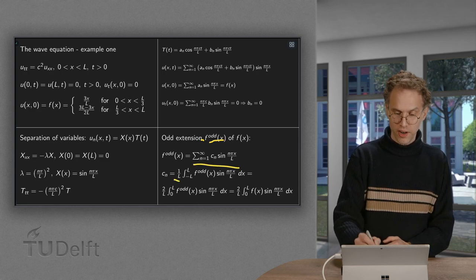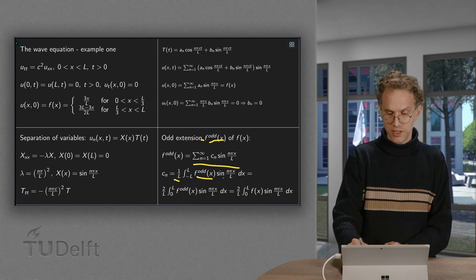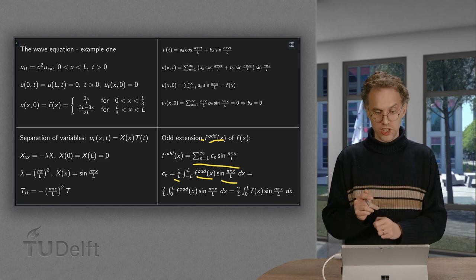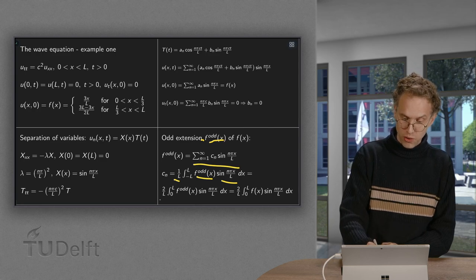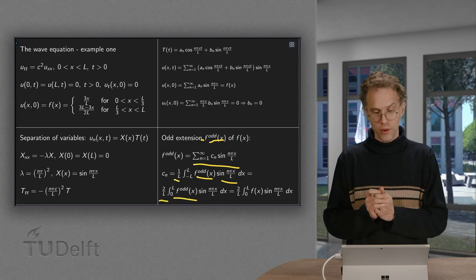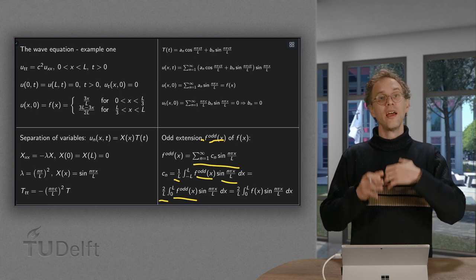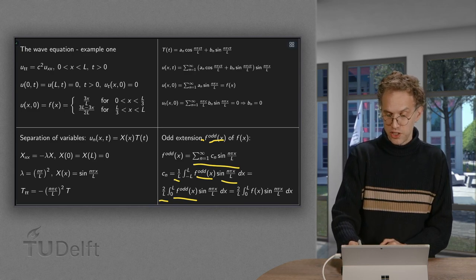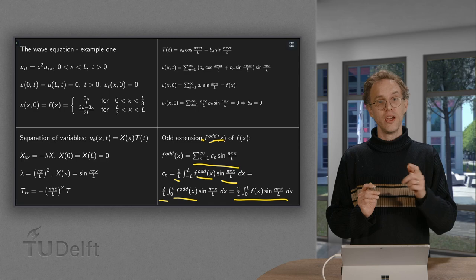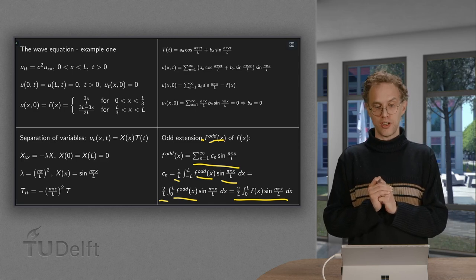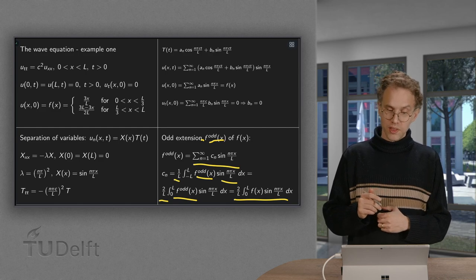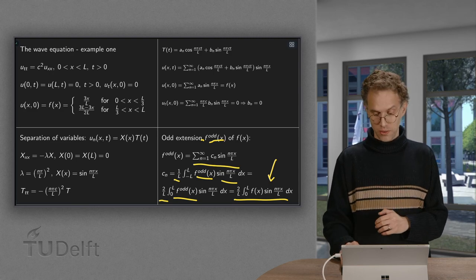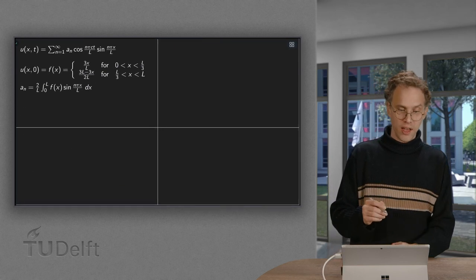And then we know this odd extension only has sines. And its coefficients are 1 over L integral minus L to L, f odd times sine n pi x over L. Now we know this odd extension is odd. The sine is odd. So the product is even. So we can rewrite this integral as 2 over L and just integrate from 0 to L over f odd sine n pi x over L dx. And then we use that between 0 and L, the odd extension and f are the same. So this is in fact just the same as 2 over L integrated from 0 to L of f(x) and sine n pi x over L. So our coefficients, an, are given by this seemingly nasty integral. So let's summarize.